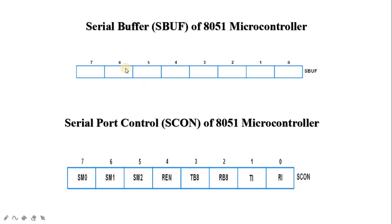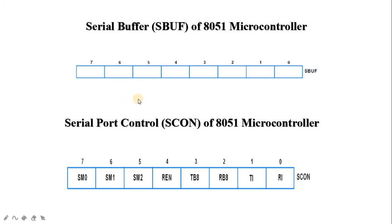The next topic is the serial buffer (SBUF). The AT51 has serial data communication that uses register SBUF to hold data. SBUF is physically two registers: one is write-only, used to hold data to be transmitted out of the AT51 via TXD (transmit data); the other is read-only and holds received data from an external source via RXD (receive data).